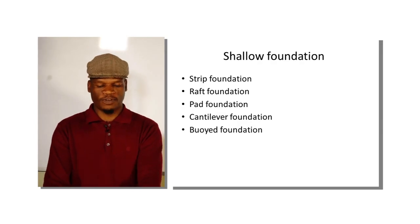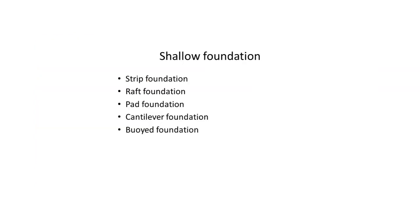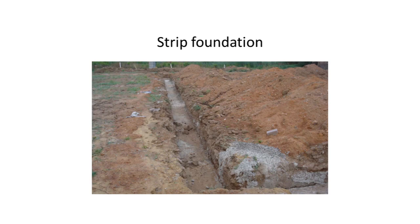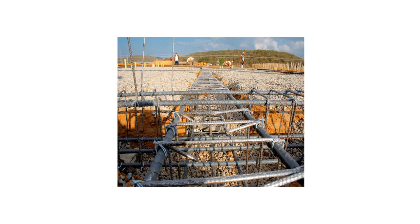There are five types of shallow foundation. Number one is the strip foundation, then you have the raft foundation, the pad foundation, the cantilever foundation, and lastly the buoyed foundation. The strip foundation is normally used in residential houses, particularly one-story residential houses, and sometimes reinforcement is placed in it and sometimes not.